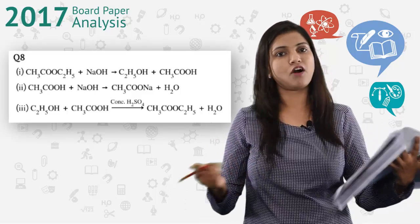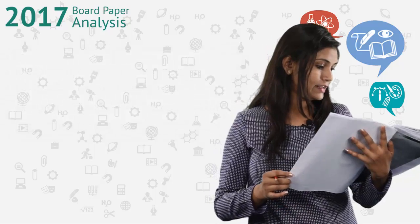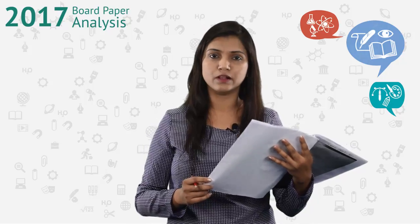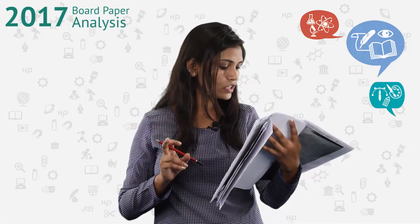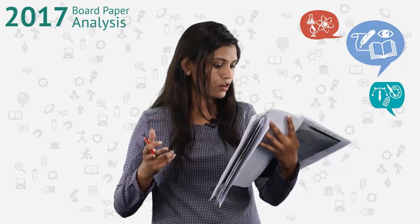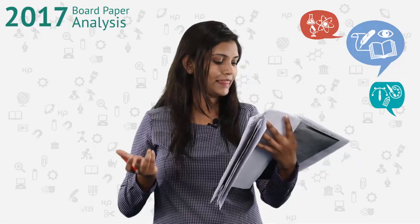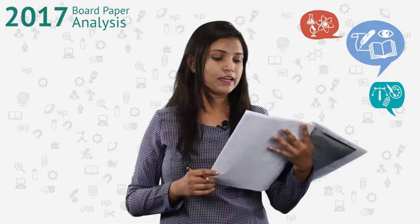Question 9 talks about the modern periodic table. We need to name the vertical columns and the horizontal rows, and along with that find out the trends of metallic character and atomic radius. We know what to write, and that is going to fetch us three more marks.